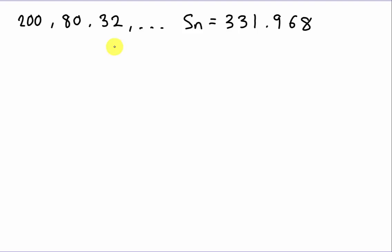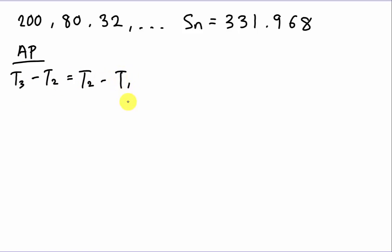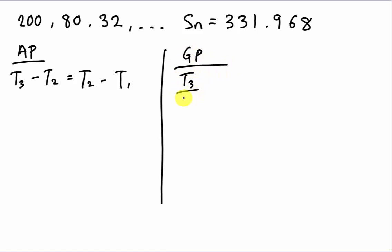The only way we can differentiate whether this is arithmetic progression or geometric progression is: if it is AP, the third term minus the second term will equal the second term minus the first term. If it is geometric progression, the third term divided by the second term should equal the second term divided by the first term.